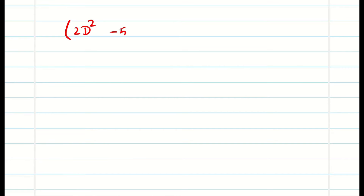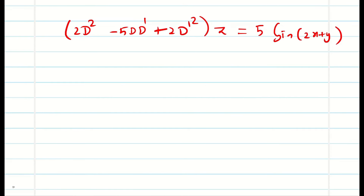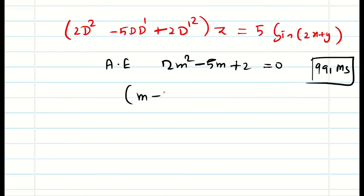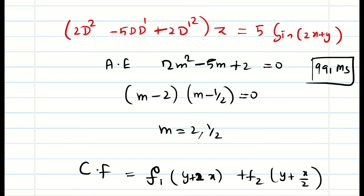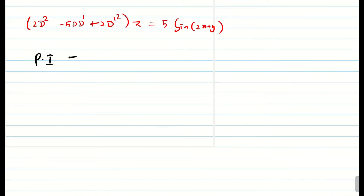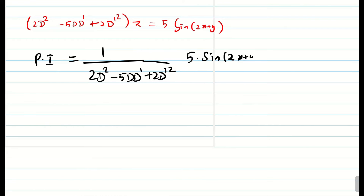Let us go into one more problem for greater confidence. The equation is 2d² - 5dd' + 2d'² applied to z = 5·sin(2x + y). For the auxiliary equation: 2m² - 5m + 2 = 0. Use your calculator — the roots give (m - 2)(m - 1/2) = 0, so m = 2 and m = 1/2. CF = f₁(y + 2x) + f₂(y + x/2). Now let us find PI.